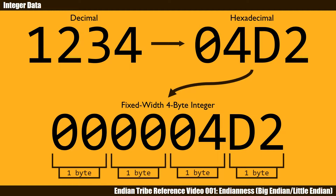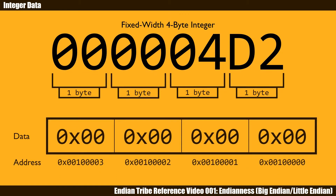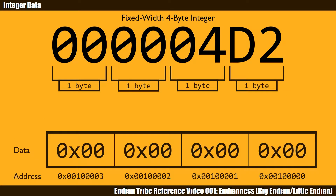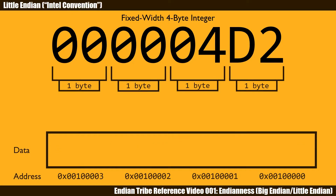There are exceptions to this, which we'll disregard in this video. Now the question becomes: how do we fit those 4 bytes in memory? In our memory representation, which is the long rectangle at the bottom, we stipulate that the memory address grows from right to left. You do not necessarily need to follow this convention. Let's zero out the memory.